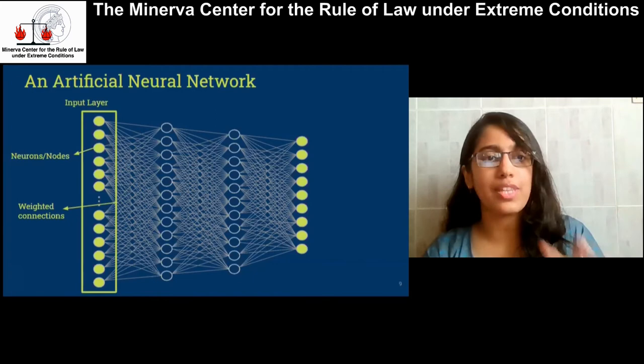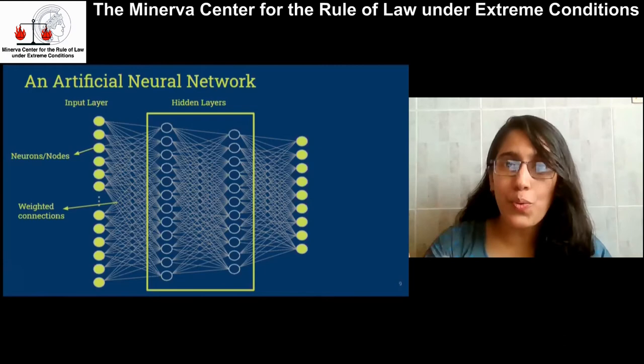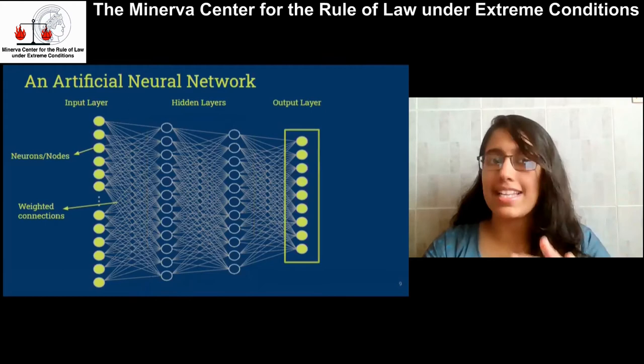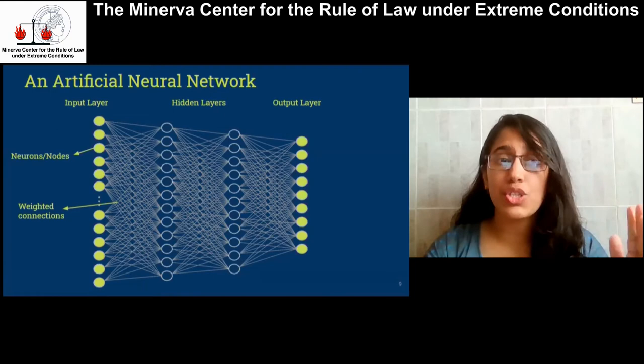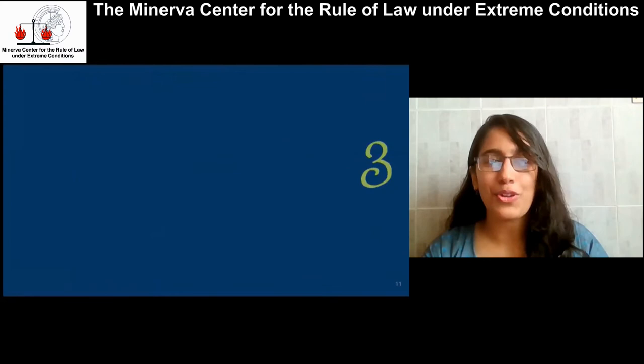We give the inputs or stimuli into the nodes of the input layer. Depending on the information in the nodes, the nodes in the successive layers fire. The layers in between are called hidden layers because you don't really know what exactly is going on in there — it's kind of like a black box. Based on how these neurons fire or get activated, we get an output in the output layer. And for different tasks, we need to change the connections between the different layers.